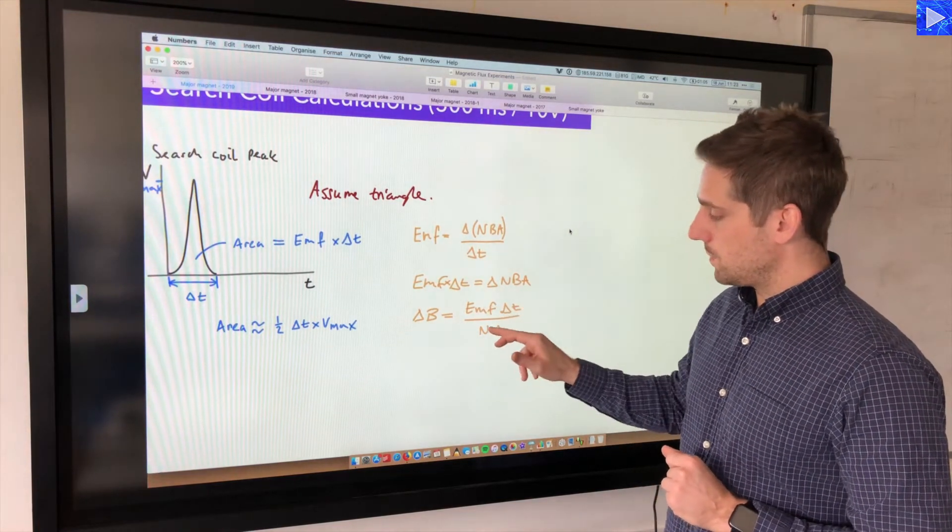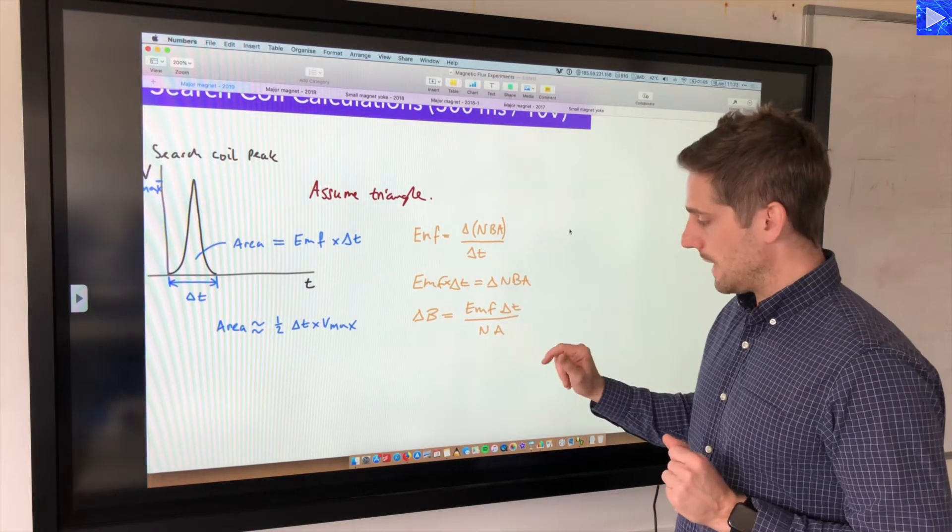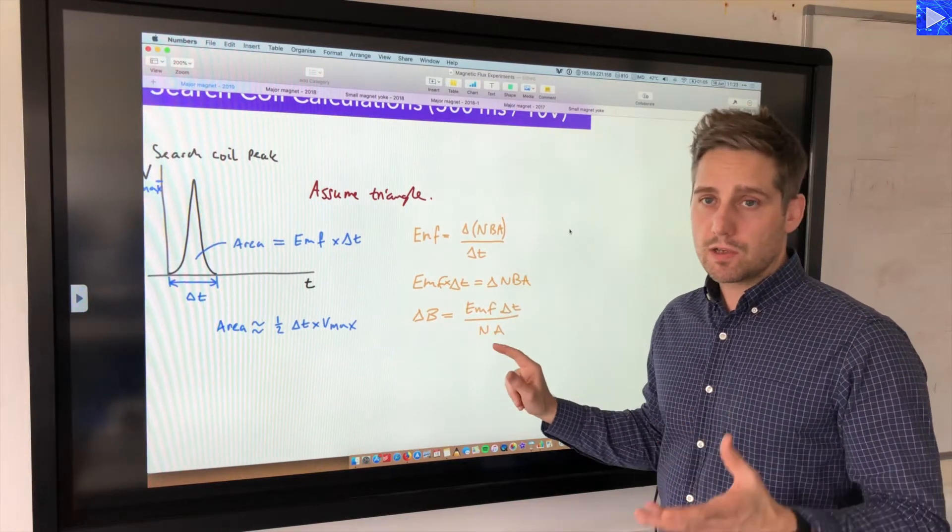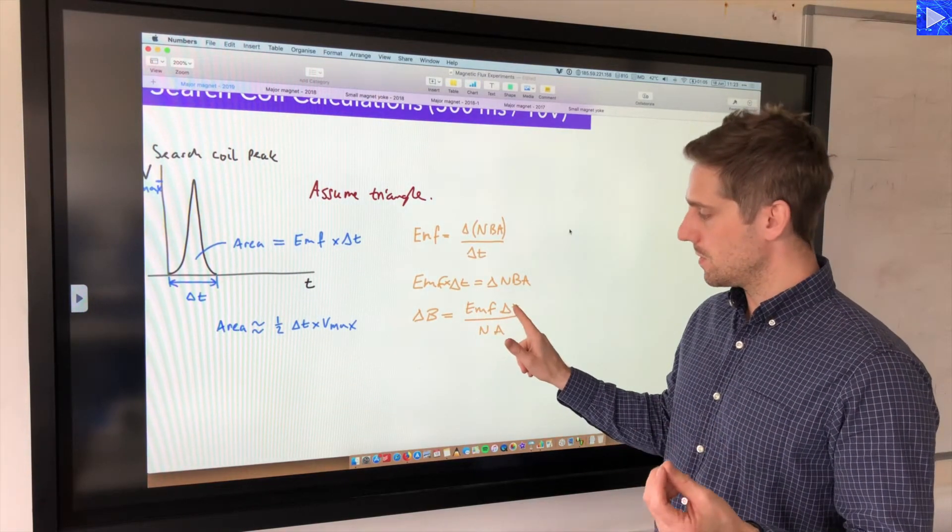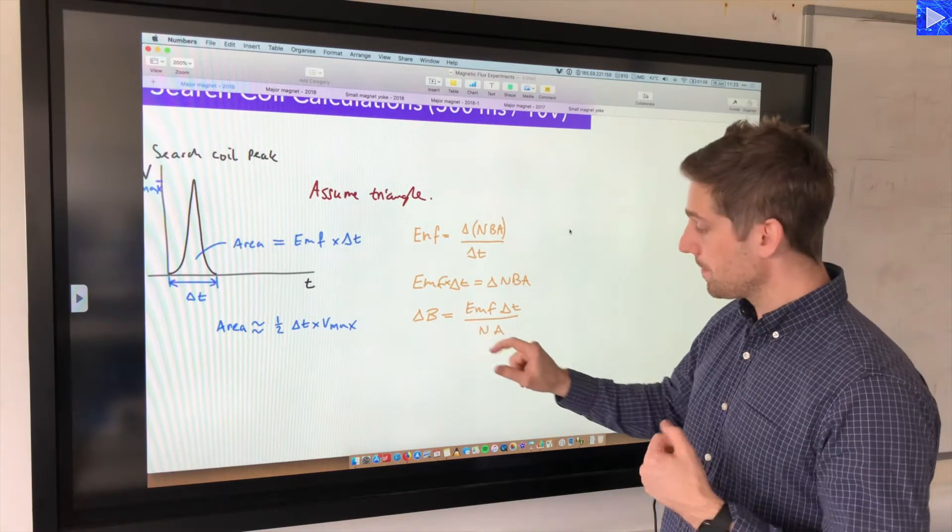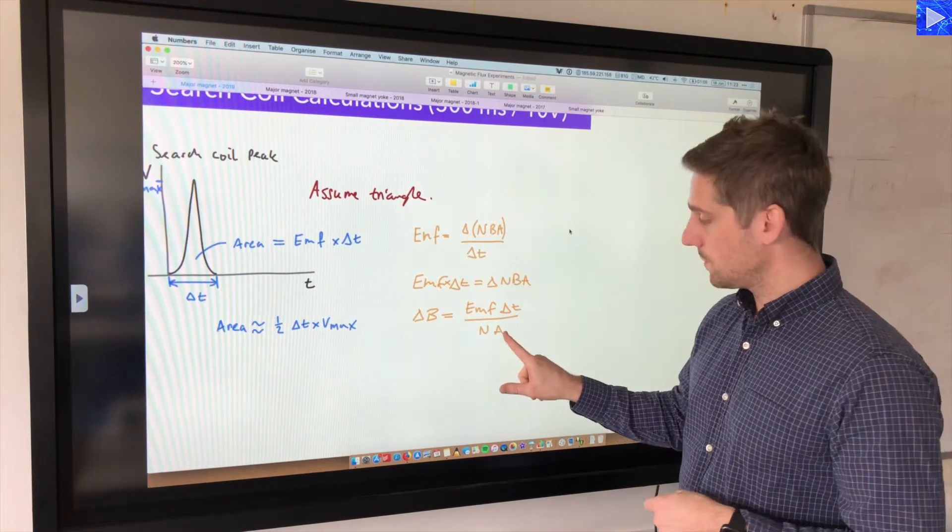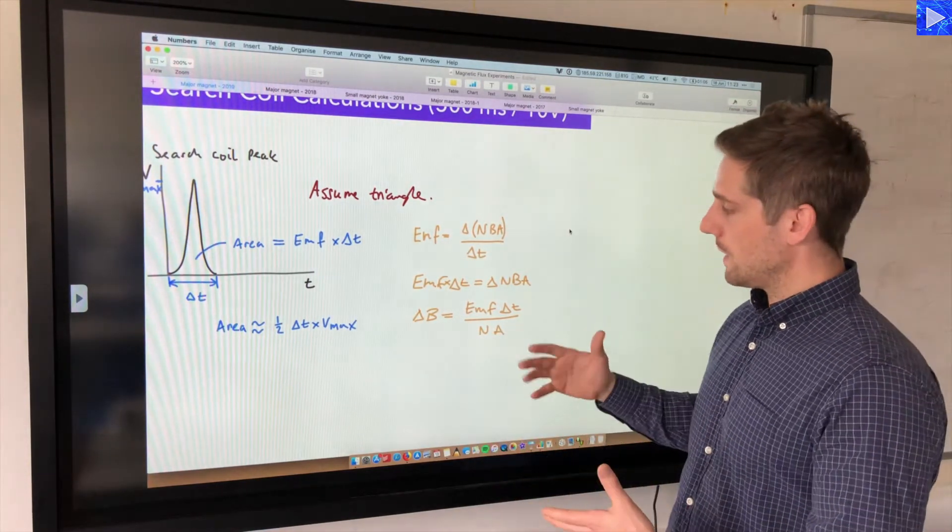That's equal to the EMF times delta T over N times A. This is the area under the peak that we got. This is the number of turns, this is the cross-sectional area. So that's what we're doing essentially in the spreadsheet.